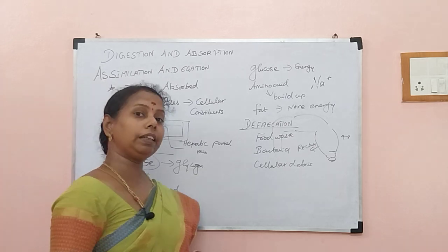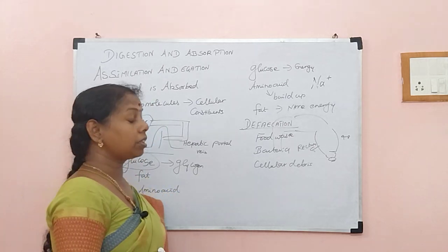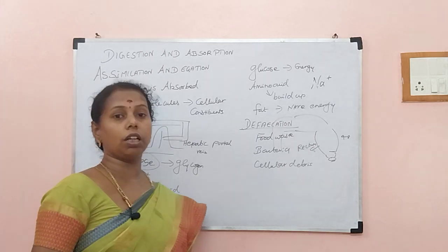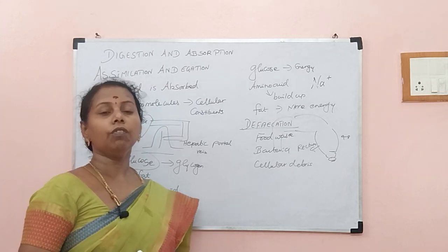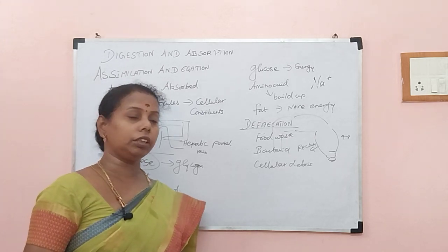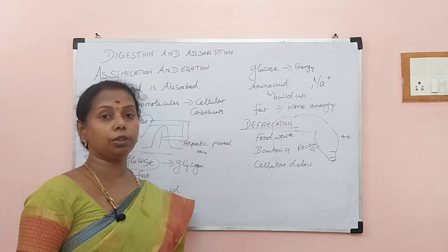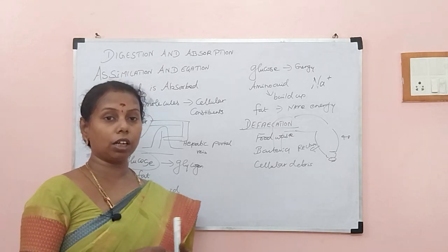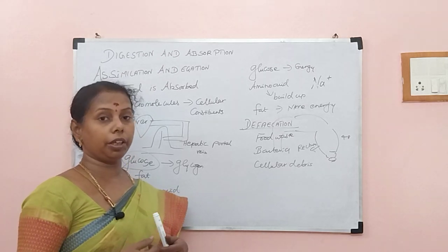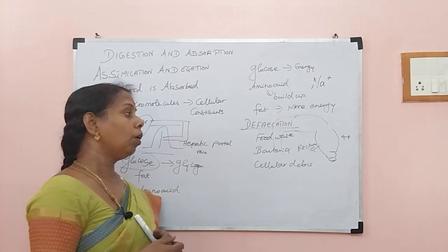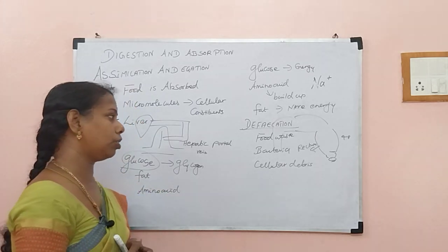The internal sphincter is involuntary and the external is voluntary — for adults. If you take children, both are involuntary only. Later on, gradually by habit, they bring the external sphincter to the voluntary condition.